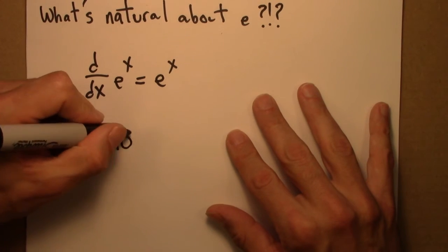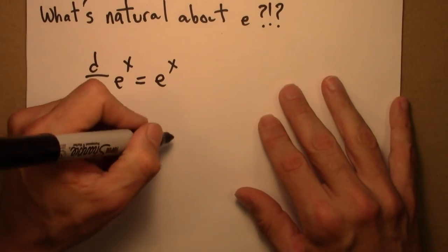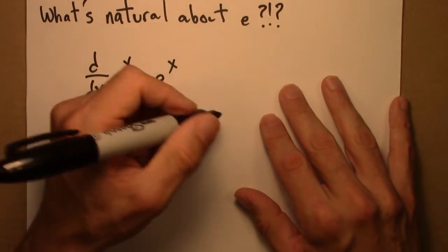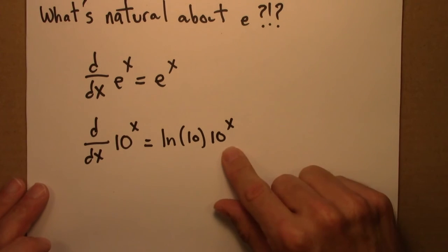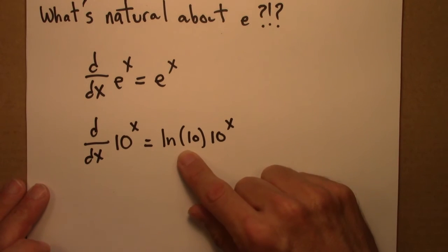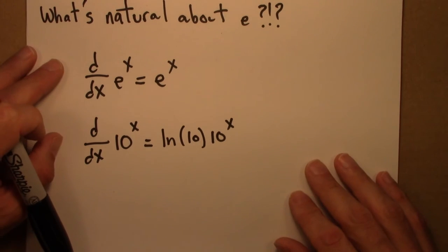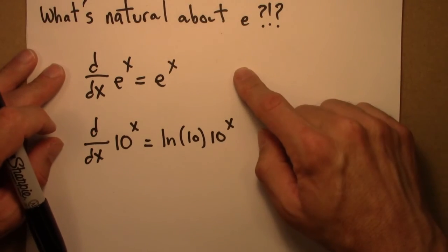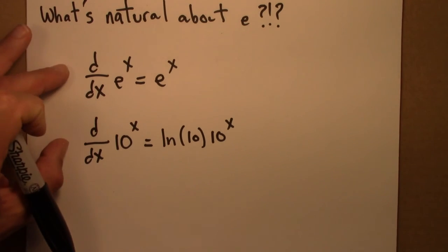On the other hand, the derivative of this function is not exactly itself. The derivative of 10 to the x is 10 to the x with this extra natural log 10 term sticking around. So this is something that comes up in the first term of calculus class. And one goes through a more involved derivation than this. And then one suddenly sees why e is a natural number.